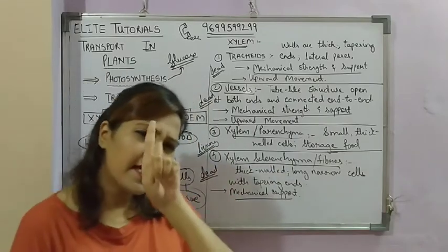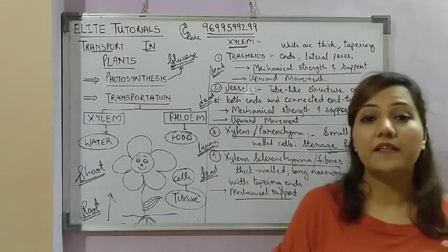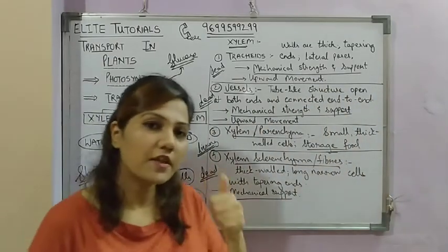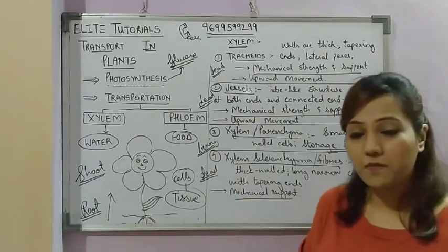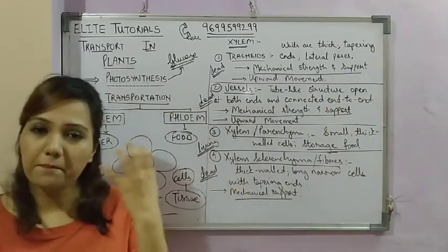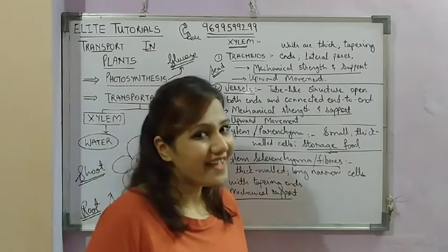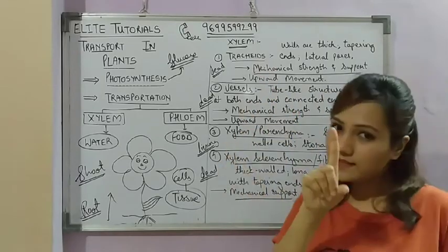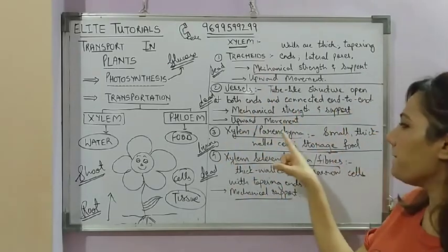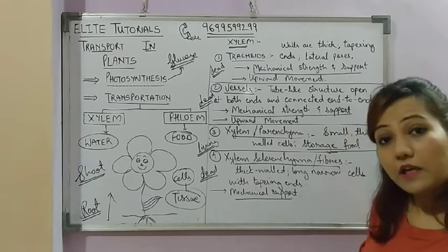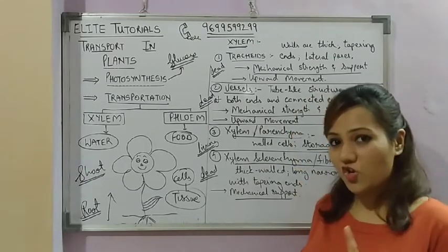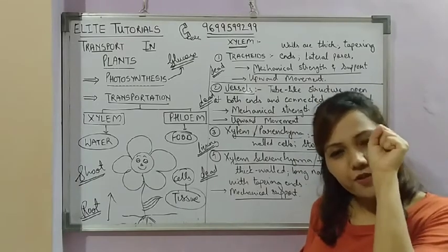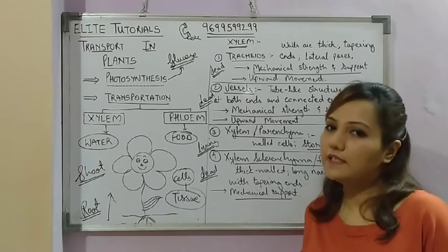Out of these four cells, only one cell is a living cell — that is xylem parenchyma. The remaining three are dead cells. Dead cells, like those in our hair and nails, are why we feel no pain when we trim them. Similarly, in xylem tissue, three of the four cells are dead. Because they are dead cells, they are very strong and rigid, which allows water to be transported easily.